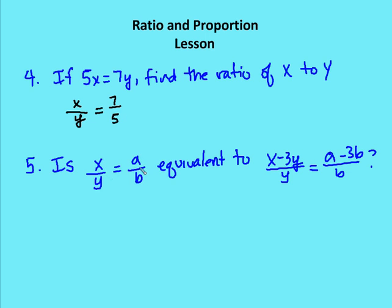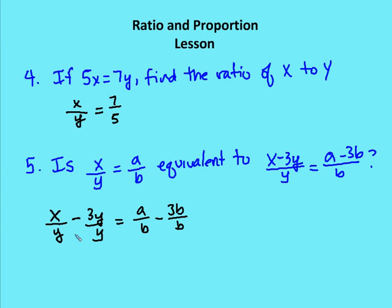Is x over y equals a over b equivalent to (x minus 3y) over y equals (a minus 3b) over b? The answer is yes. We can rewrite the left side as x over y minus 3y over y, which simplifies to x over y minus 3. Similarly, a over b minus 3b over b simplifies to a over b minus 3. So we have x over y minus 3 equals a over b minus 3, and adding 3 to both sides gives x over y equals a over b, confirming the equivalence.